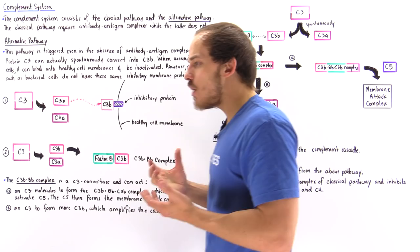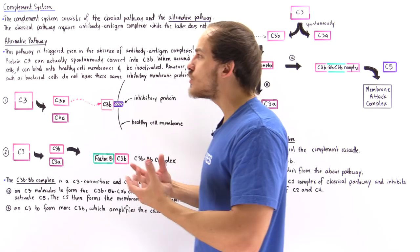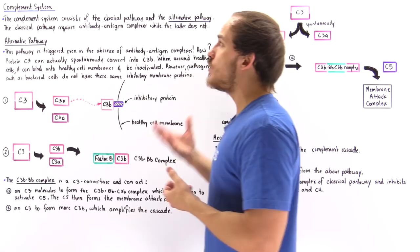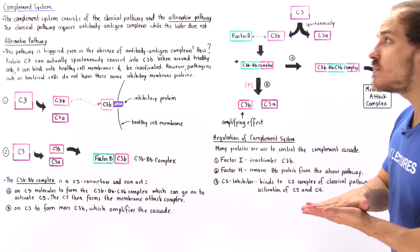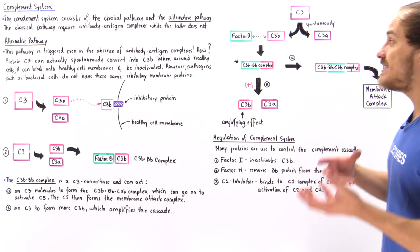Now, the final component I'd like to talk about is how we actually regulate the complement system. We don't always want the complement system to be activated because it is very energy consuming. If we don't have any pathogens in our body, why would we want the complement system to be activated? We don't. The way we regulate it is by using many different types of proteins.